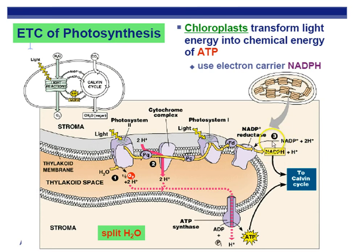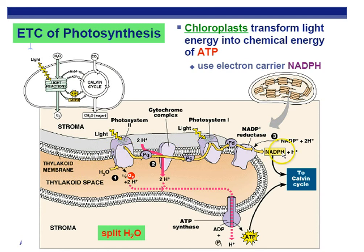When you reduce something, you add an electron — and a proton follows in living systems, meaning an electron plus a proton is a hydrogen. That's how we make NADPH. This is a redox reaction, so the electron from water ends up in NADPH. NADPH and ATP will then be used by the Calvin cycle.